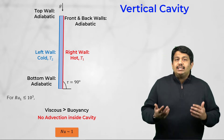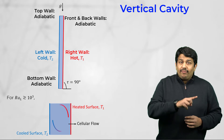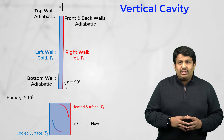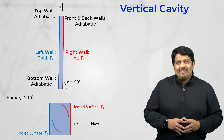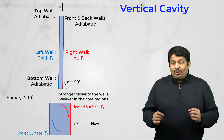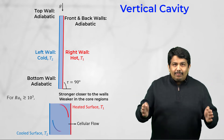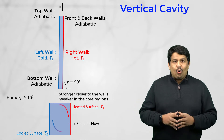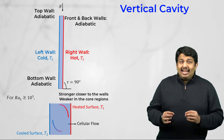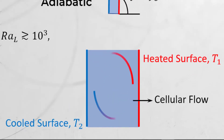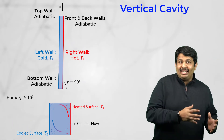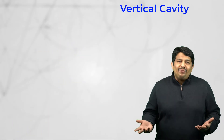As the Rayleigh number increases beyond 1000, a recirculating flow is observed inside the vertical enclosure such that the fluid rises and falls near the hot and cold walls respectively. This cellular flow in the enclosure is stronger near the boundary layer regions closer to the hot and cold walls, while the fluid is relatively stagnant in the core region of the cavity. It is important to highlight that additional cells can develop near the corners of the enclosure.